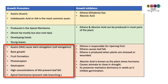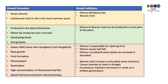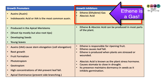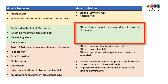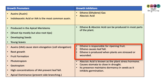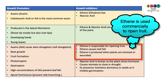IAA is important for apical dominance — it maintains apical dominance and prevents side branching. Ethene or ethylene is a gas, which is very unusual as it's the only gaseous growth regulator. Abscisic acid and ethene can both be produced in most parts of the plant. Ethene is responsible for ripening fruit and is used commercially for that purpose.